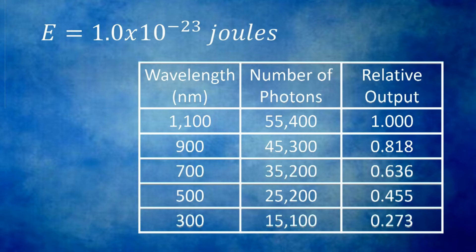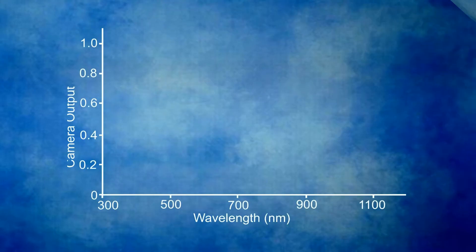We can plot these points on a graph to see what our ideal camera output would be. We notice that the output declines as the wavelength gets shorter. This is because there are fewer photons needed at shorter wavelengths to achieve the constant light energy.